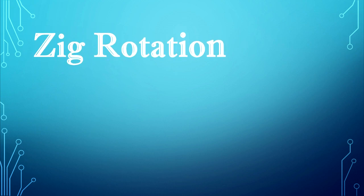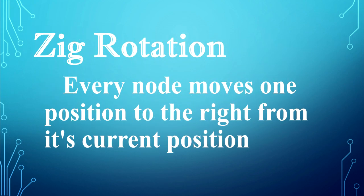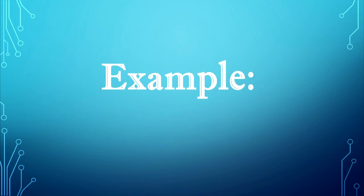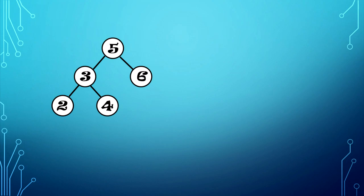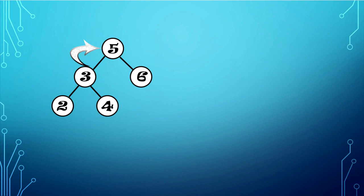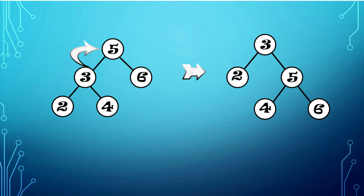Zig rotation. In zig rotation, every node moves one position to the right from its current position. We have a simple binary tree with a root node of element 5. Now we are going to splay element 3 using zig rotation. The element 3 will be moved once to the right. The result will be: element 3 will be the root node, and the previous root node, which is element 5, will be the right child of the new root node.